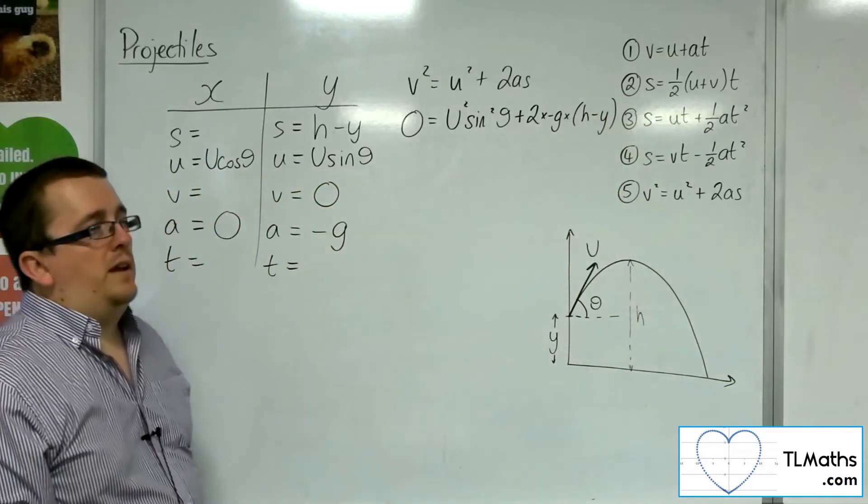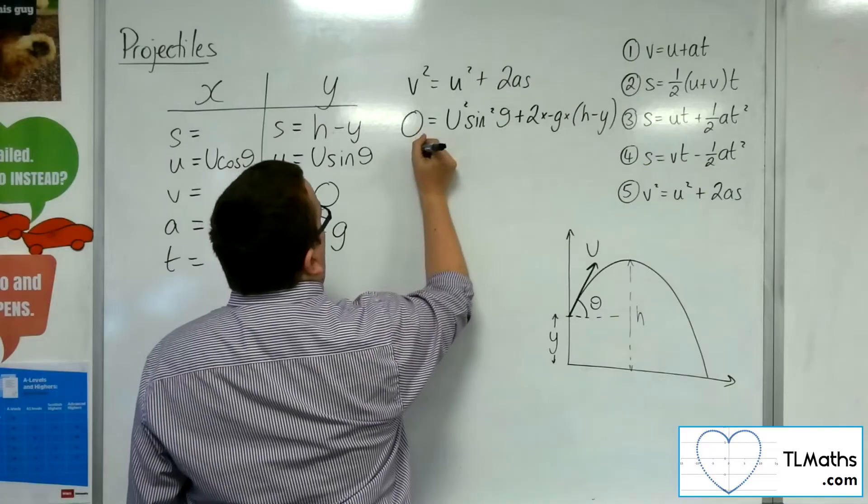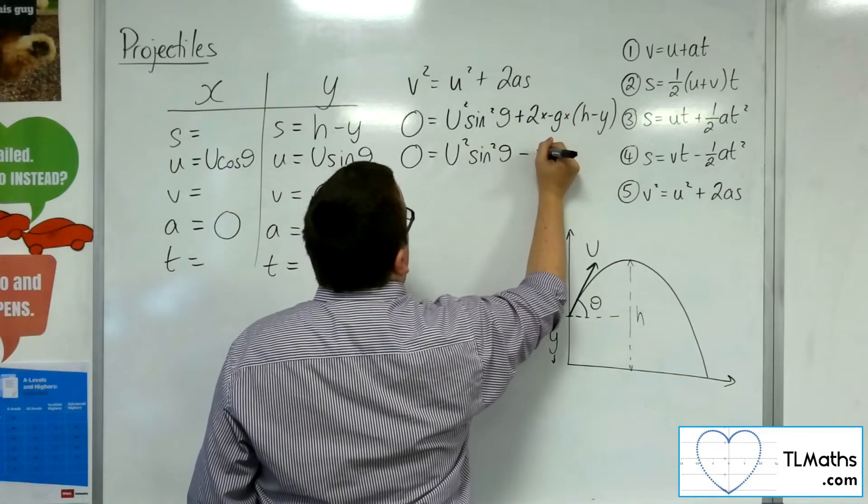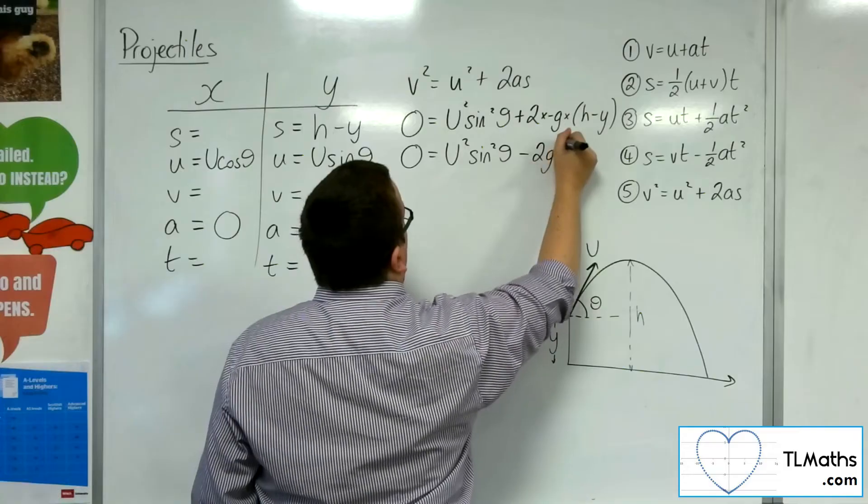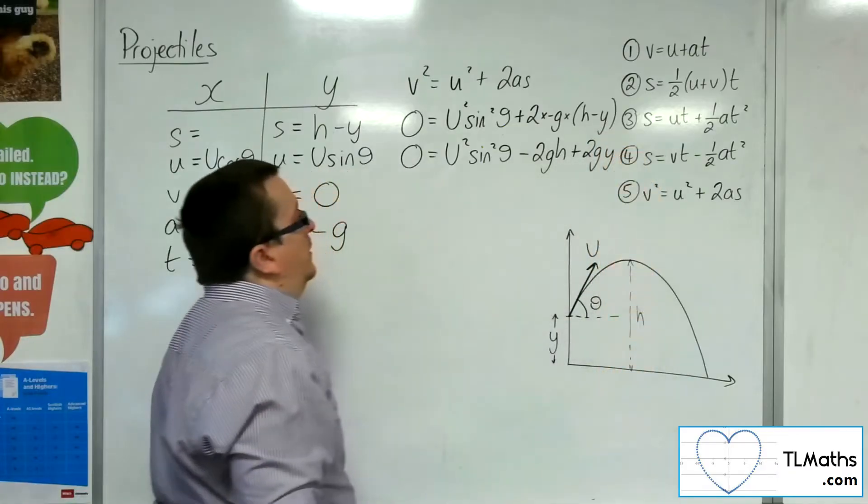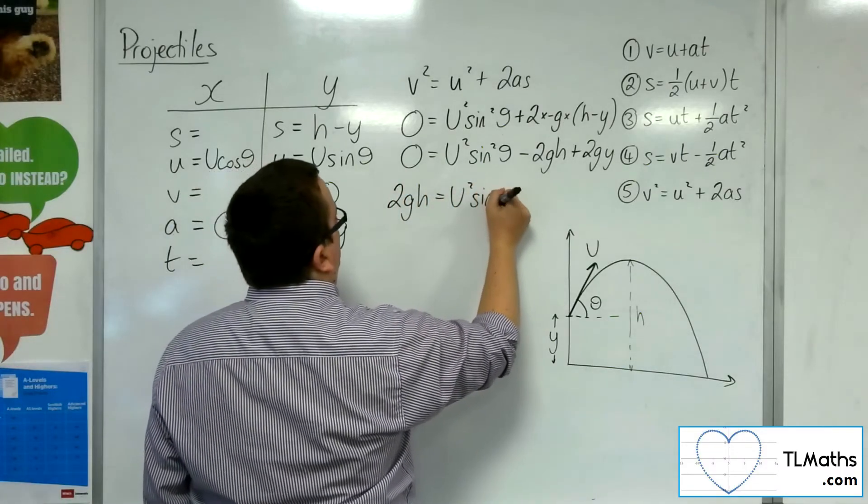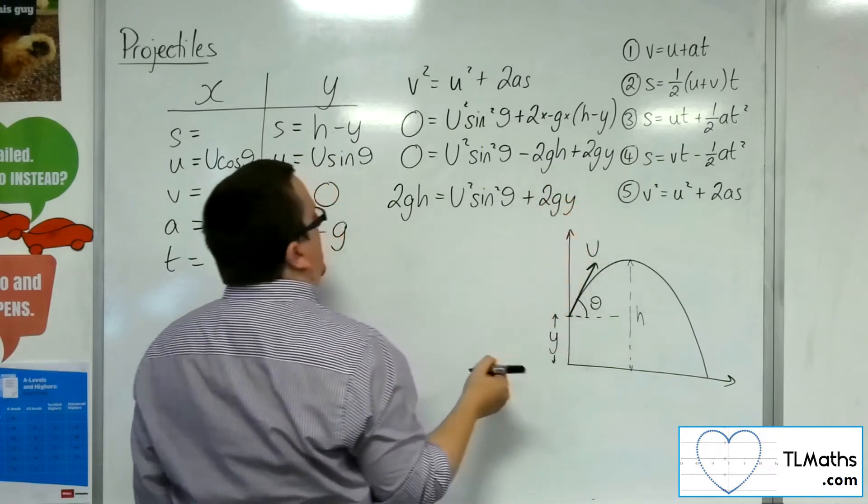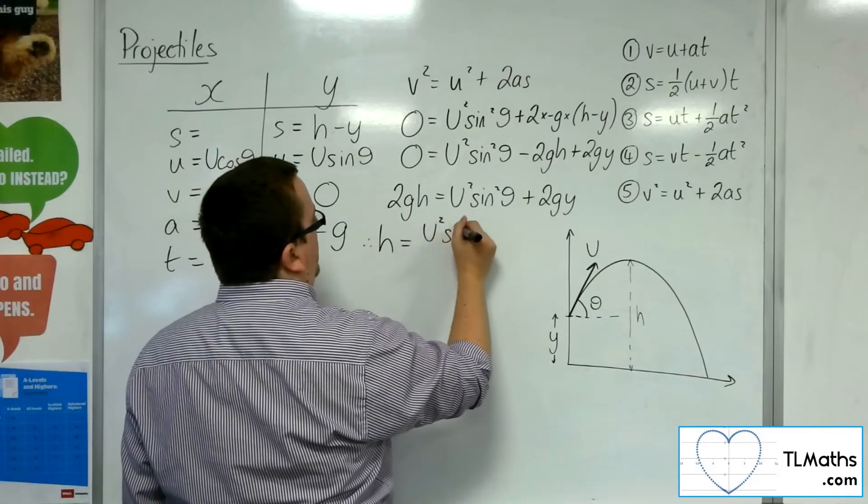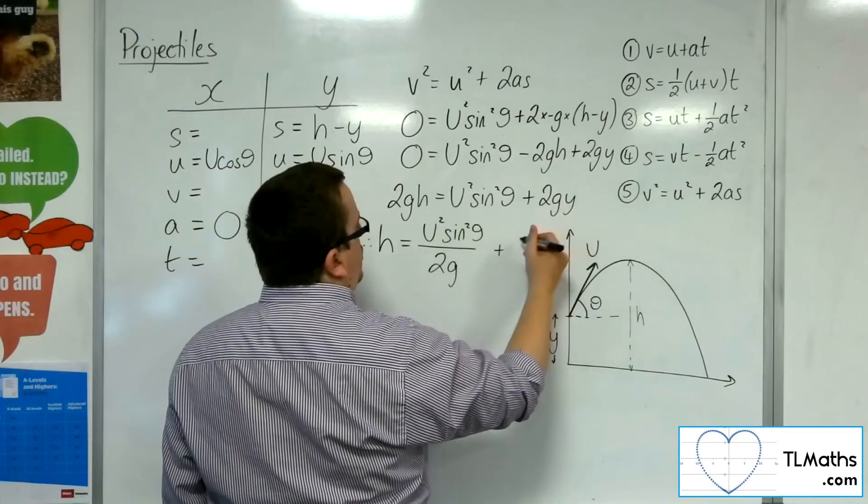So this is our formula as it stands. I want to get it as h equals, so let's tidy this up a bit. So we're going to have 0 equals u squared sine squared theta, take away 2 times g times h, plus 2 times g times y. So I can add the 2gh to both sides. And then I can divide through by the 2g. So h is equal to u squared sine squared theta divided by 2g, plus 2gy divided by 2g, which is just y.